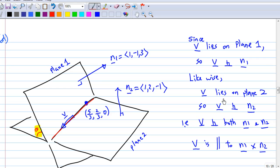Likewise v lies on plane number 2 as well. So v must be perpendicular to n2, the normal to the second plane. From these two statements, the vector v is perpendicular to both n1 and n2.